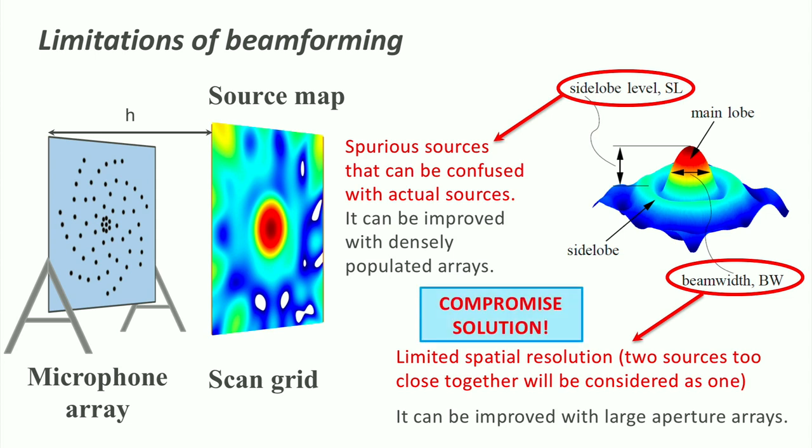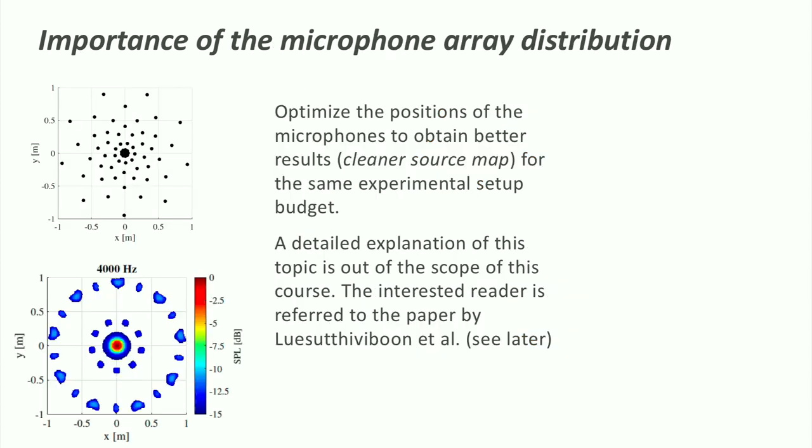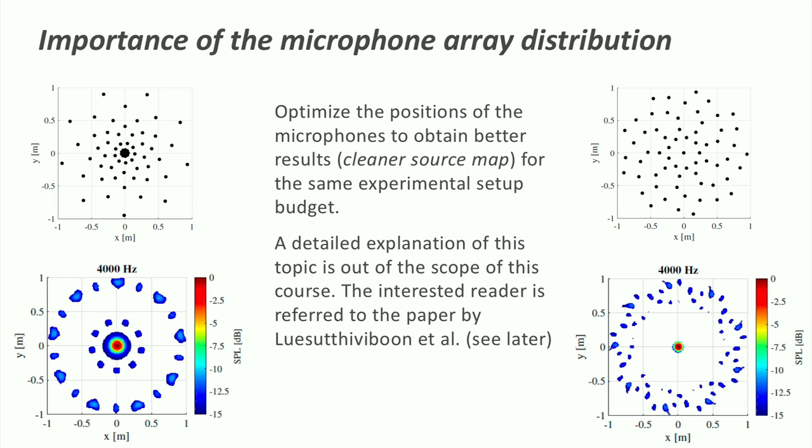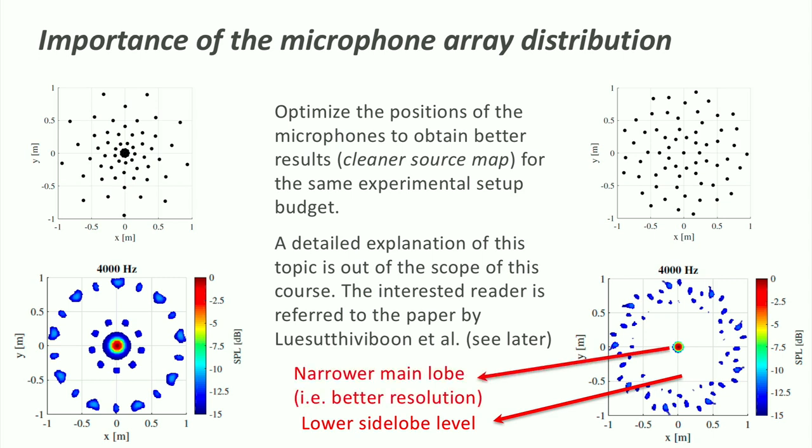Therefore, we need a compromised solution. For a given setup and number of microphones, we can optimize the positions of the microphones within the array, in order to obtain the best results. In this example, we have 64 microphones rearranged for a lower side lobe level and a better spatial resolution.